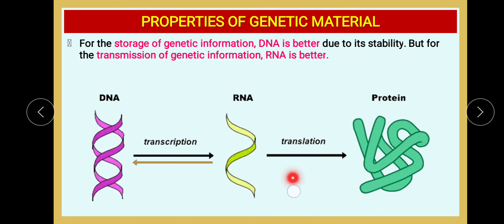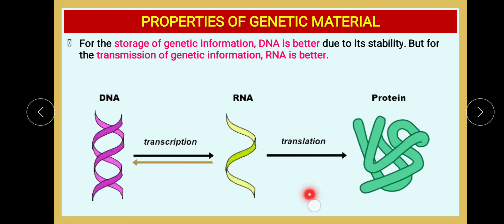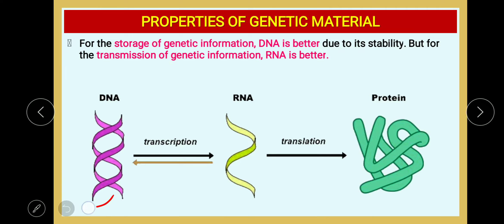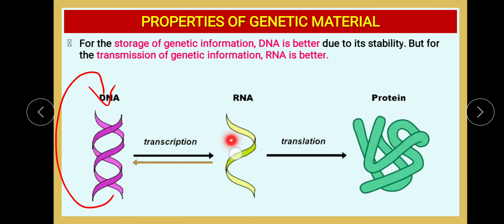For translation, ribosomes are required. Ribosomes copy the message present on the RNA in the form of codons into amino acids in the protein — that's why we call ribosomes the protein factories. Along with this, DNA can also self-replicate. So DNA undergoes self-replication, transcription to form RNA, and RNA undergoes translation to form protein.